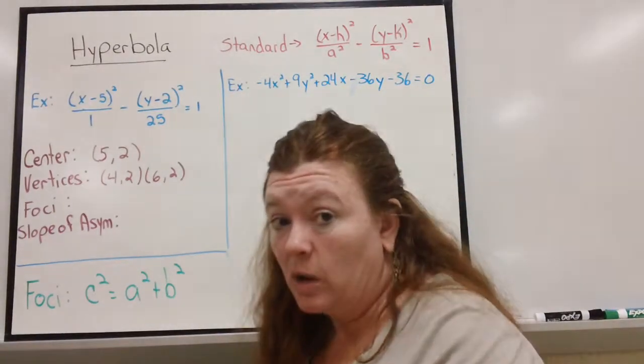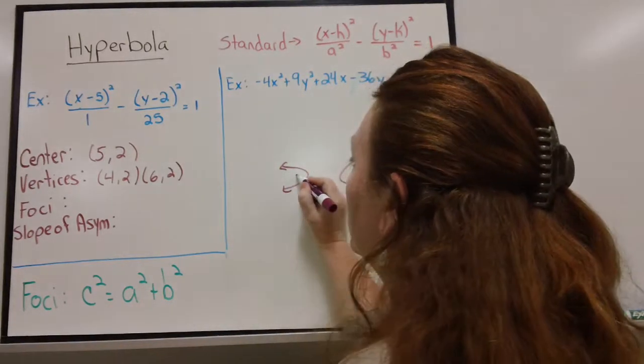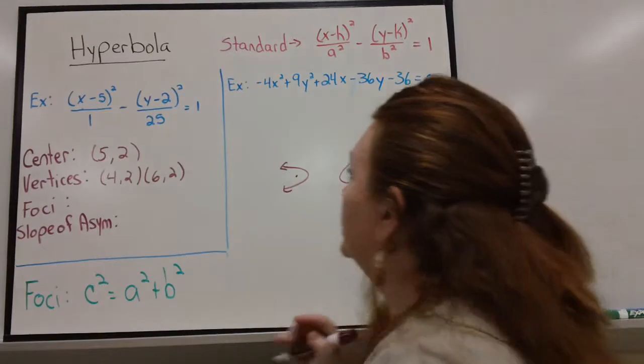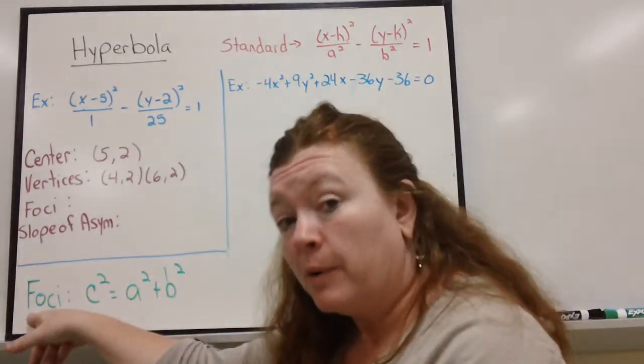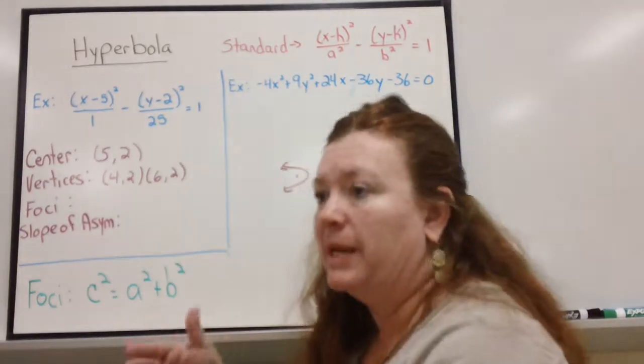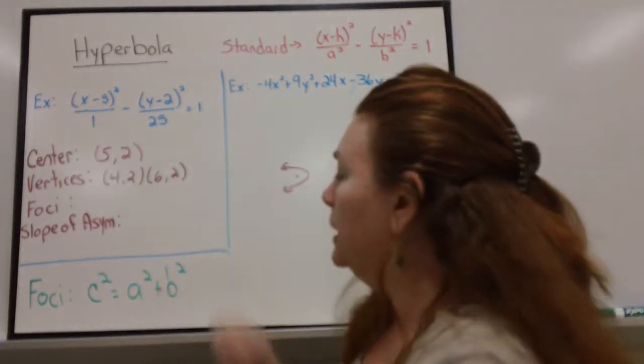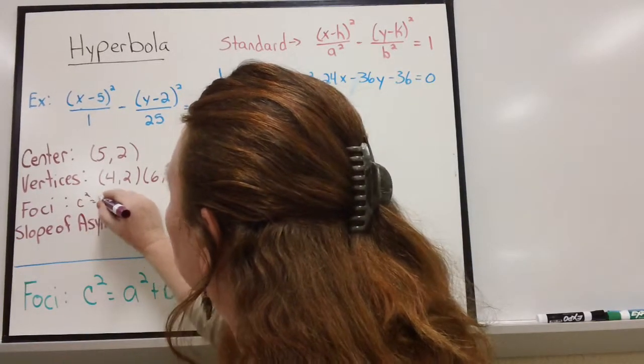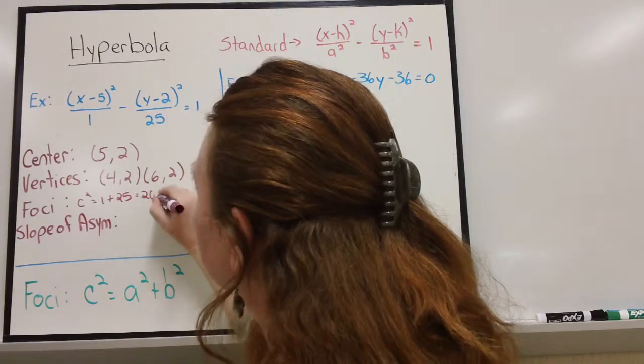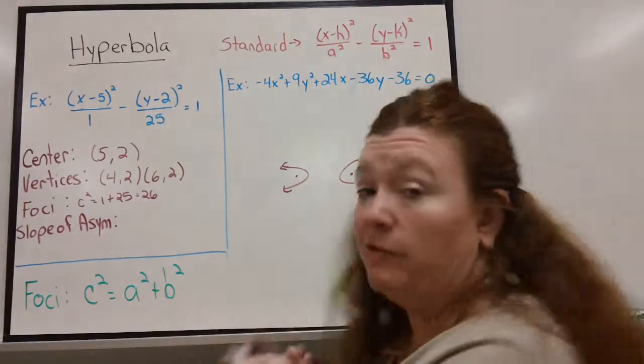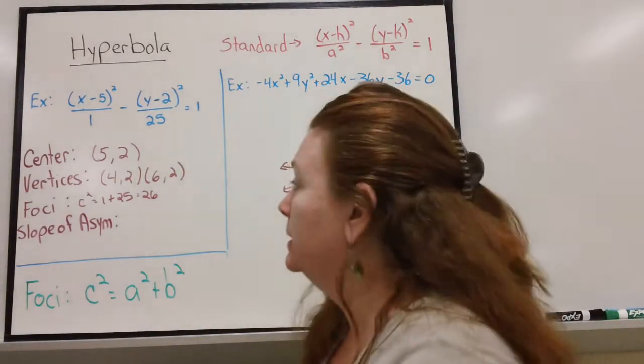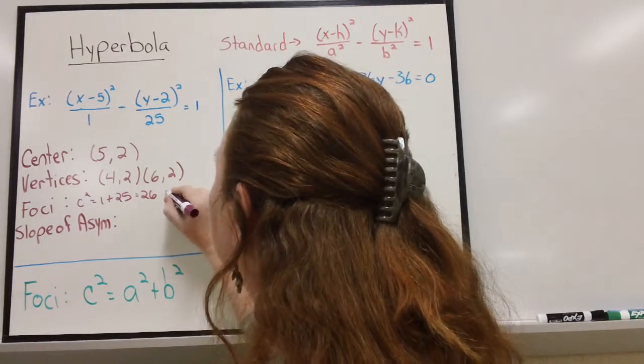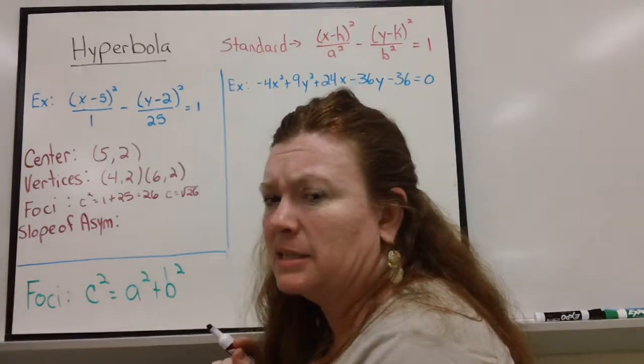Now the foci. The foci are also along the same direction that the vertices are because the foci, if you remember, are somewhere inside the parabola. So not only do I have to go out to the vertices, I have to keep going more to get to my foci. That's why for a hyperbola we're going to add a squared plus b squared. I don't want to just go a, I want to keep going. So I need to add more to it. So c squared is a squared plus b squared. So let's see, c squared is 1 plus 25 which is 26. That means c, which is how far I go to find my foci, is going to be the square root of 26. Can you break down the square root of 26? I don't think so.